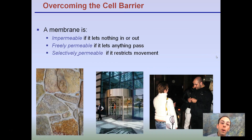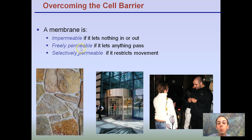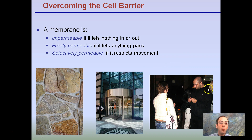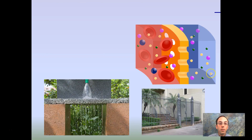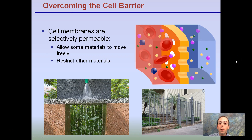The cell barrier is not impermeable — which would let nothing in or out, like a rock wall. It's not freely permeable, letting anything pass through like a revolving door. It's what we call selectively permeable. It restricts movement like a bouncer at a nightclub or bar. So overcoming the cell barrier: selectively permeable is the key term here. It allows some materials to move freely and restricts others.